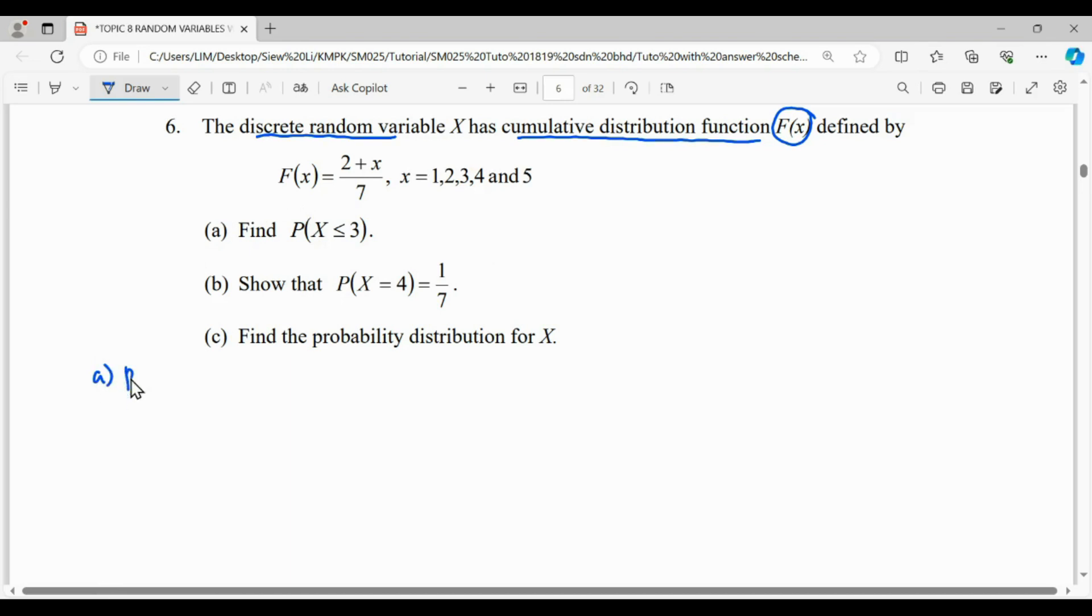When X is less than 3, what you need here is X equals 1, X equals 2, and X equals 3. So it will be equivalent to the cumulative of 3. When you have cumulative for X equals 3, it includes X equals 1 to 3.